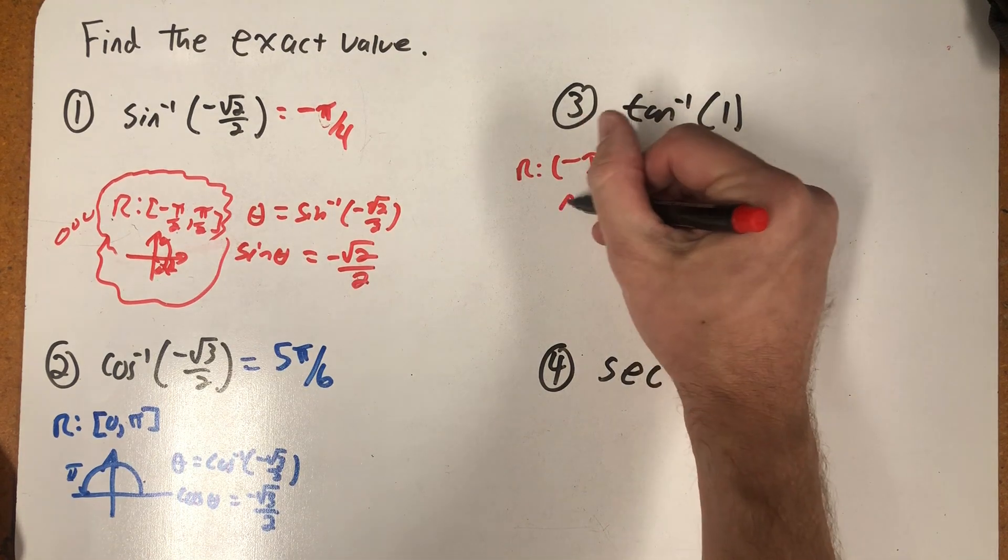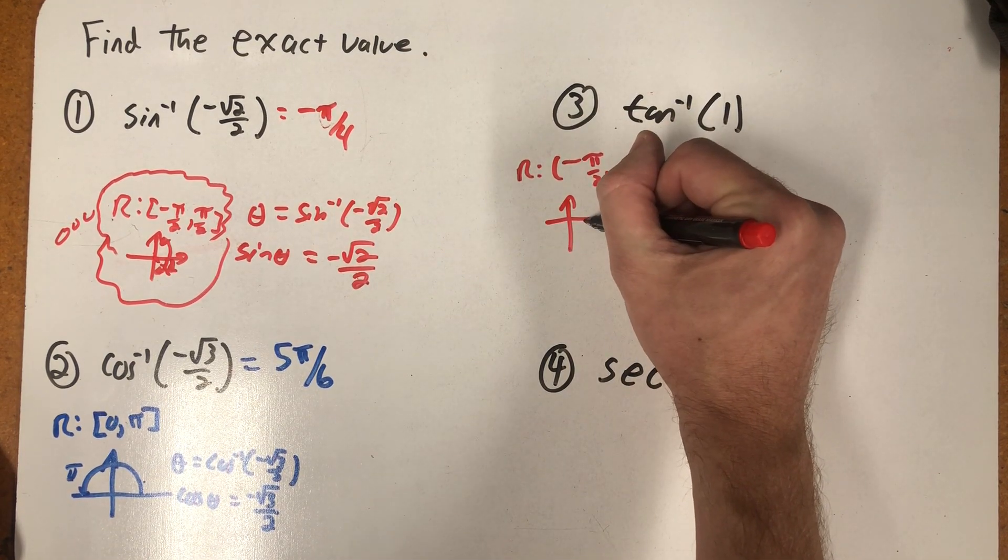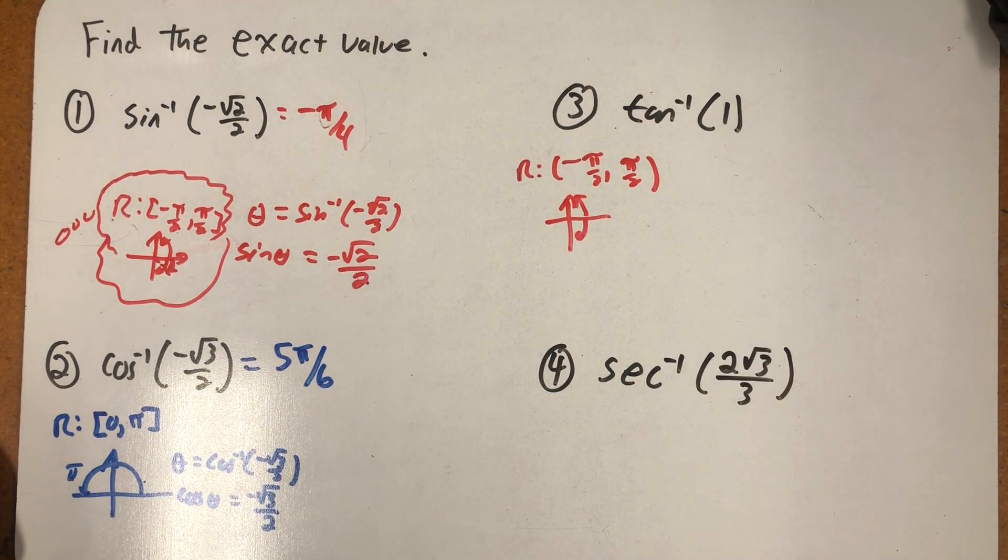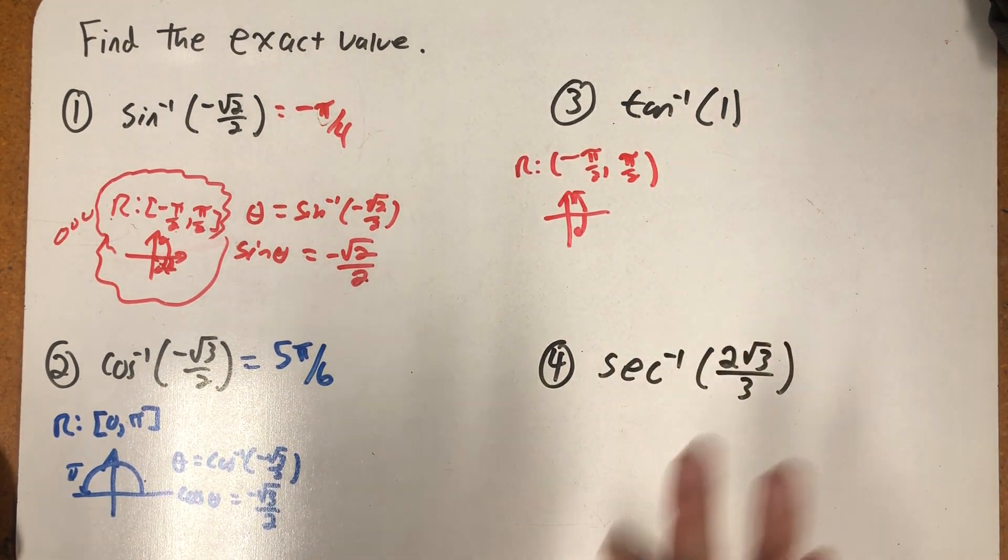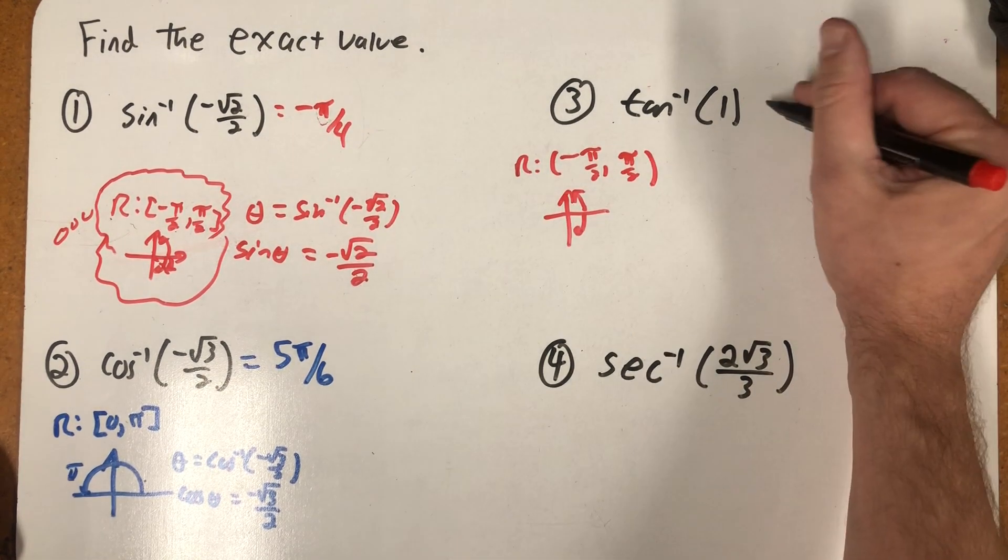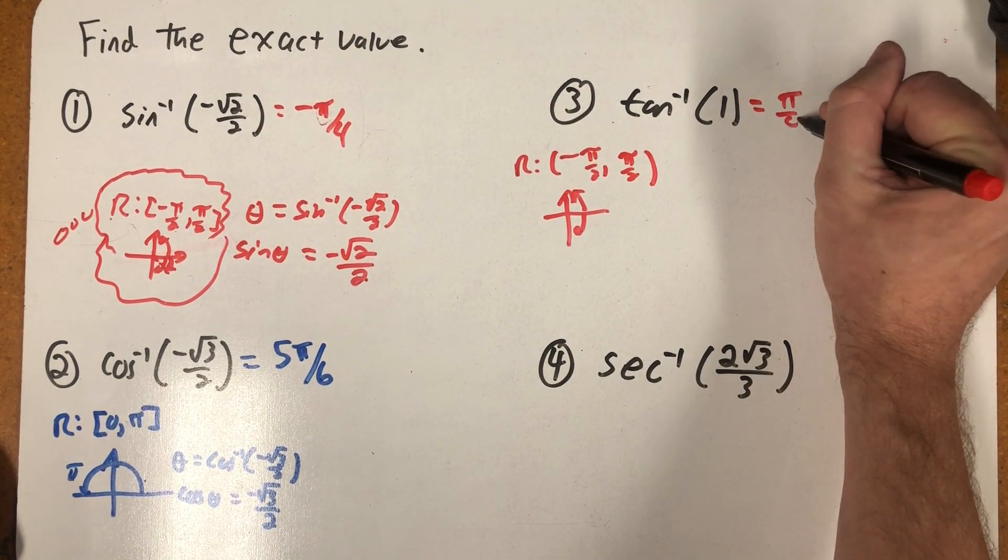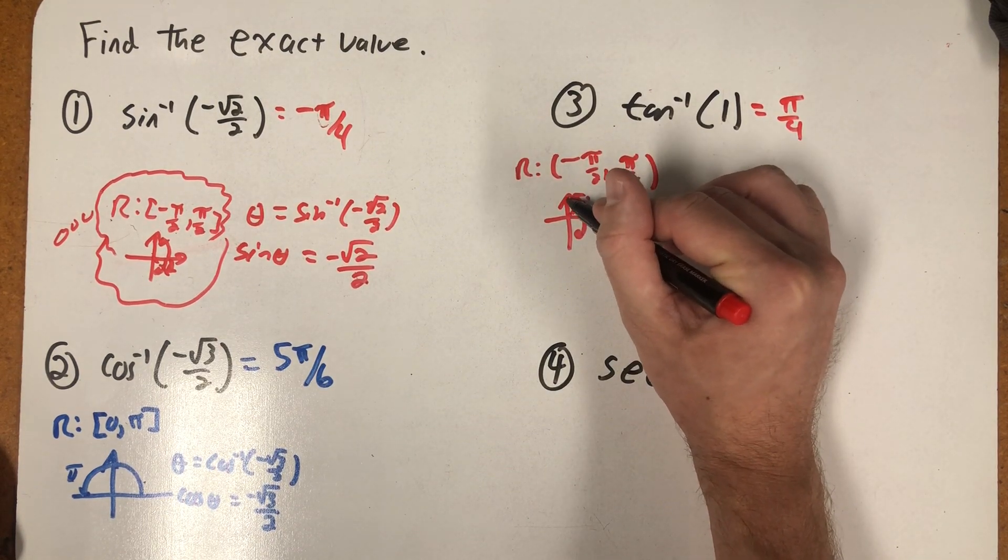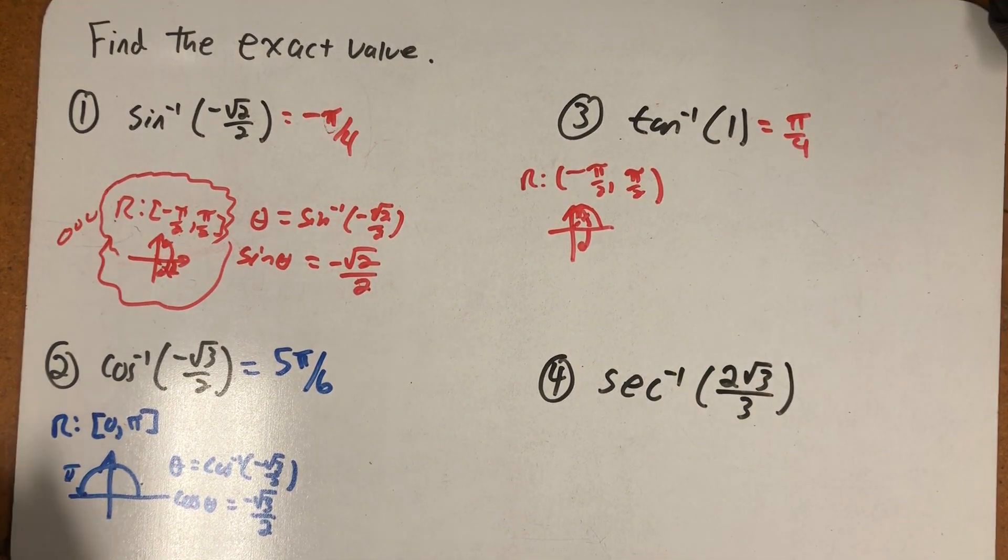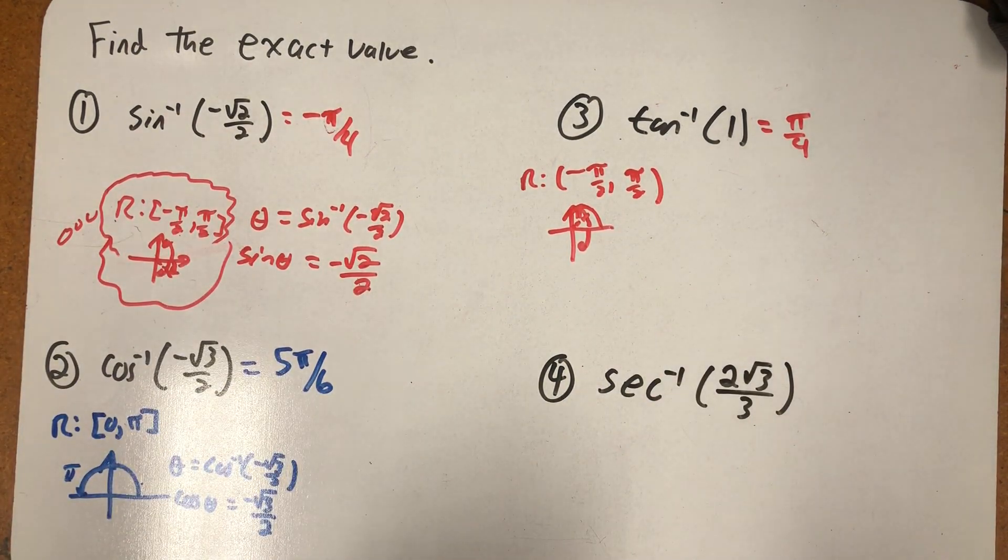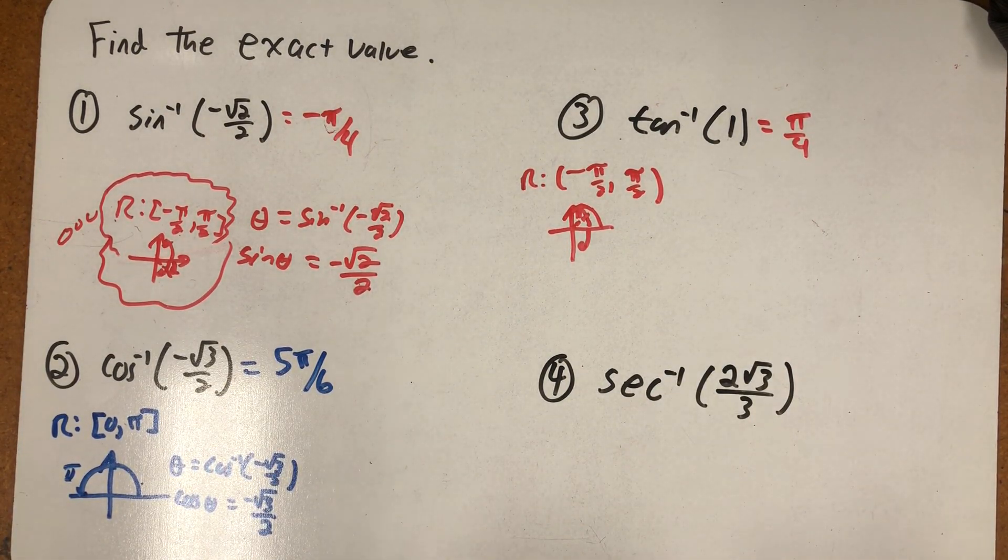So again, I'm thinking about angles either in quadrant one or four, negative angles in four, positive angles in one. Tangent's positive in quadrant number one, and so the inverse tangent of one is pi fourths. That's that nice spot in my unit circle where the ordered pairs root two over two comma root two over two, so where I put y over x, I just get one. The inverse tangent of one, positive pi over four.